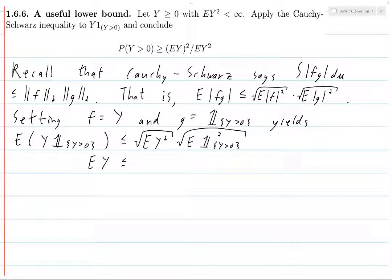And what do we have on the right-hand side? We've still got the square root of expected value of Y squared. And now if we look at the indicator of this set where Y is greater than 0, that's going to be either 0 or 1, so squaring it has no effect.